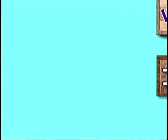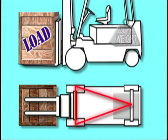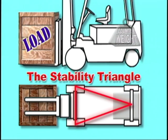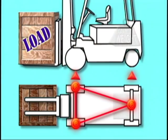An imaginary triangle is formed on the three-point suspension of the forklift. This triangle is called the stability triangle and is formed from the front drive tires and the pivot pin on the rear axle.